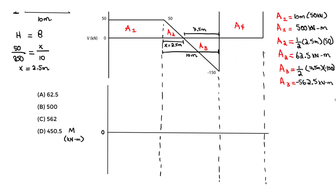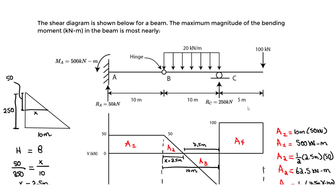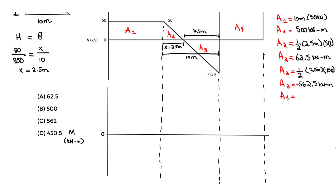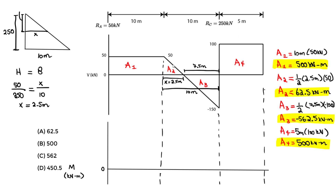Now A4. A4 is a rectangle: base times height. The base for A4 is 5 meters and the height is 100 kilonewtons. So 5 meters times 100 kilonewtons gives us A4 equals 500 kilonewton-meters. Let me highlight all the values we'll use: A1 = 500, A2 = 62.5, A3 = −562.5, A4 = 500. These values will help us arrive at the moment diagram — we always need the areas of the basic shapes.